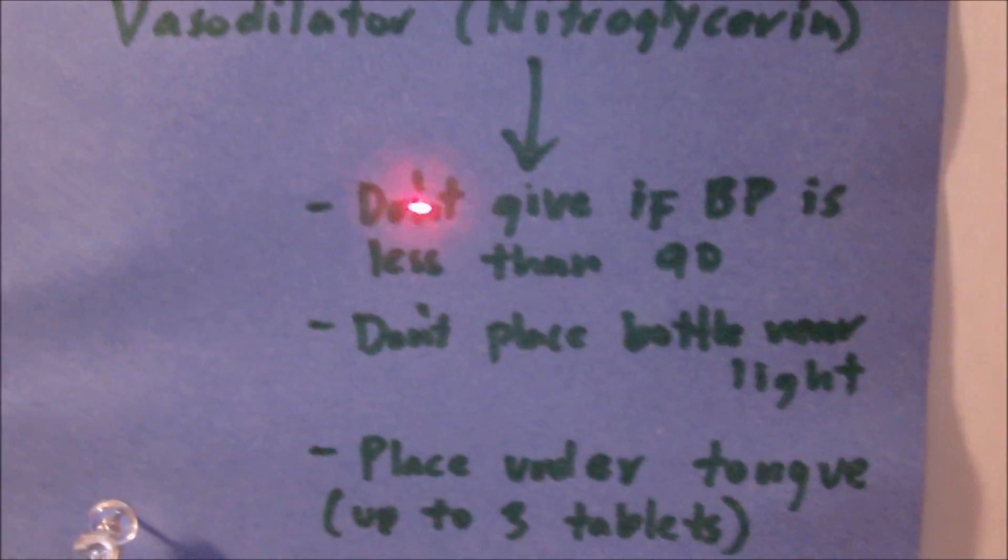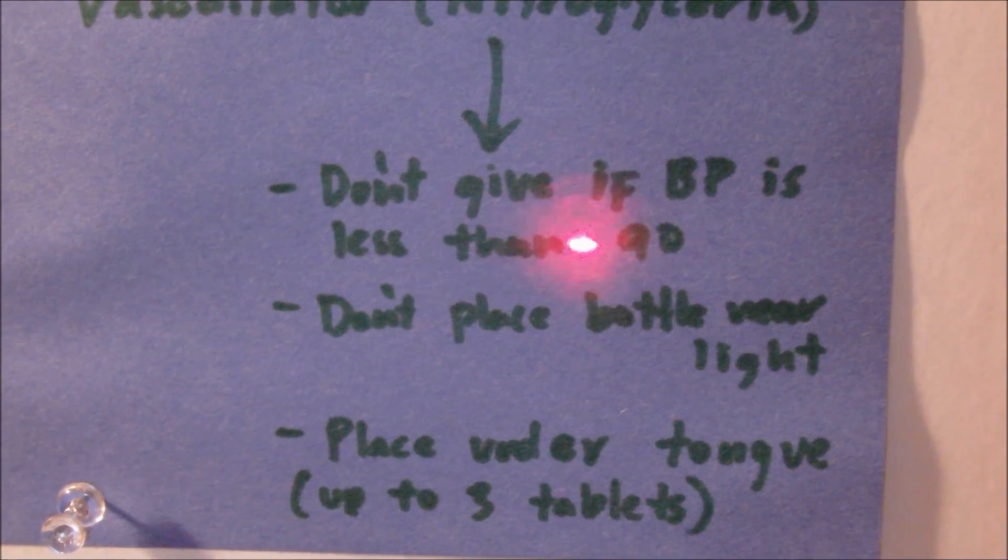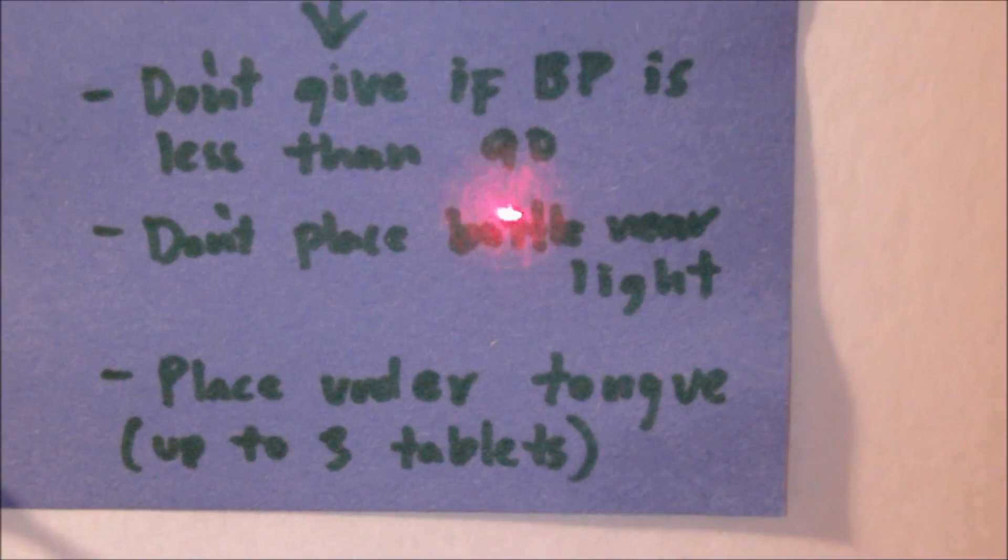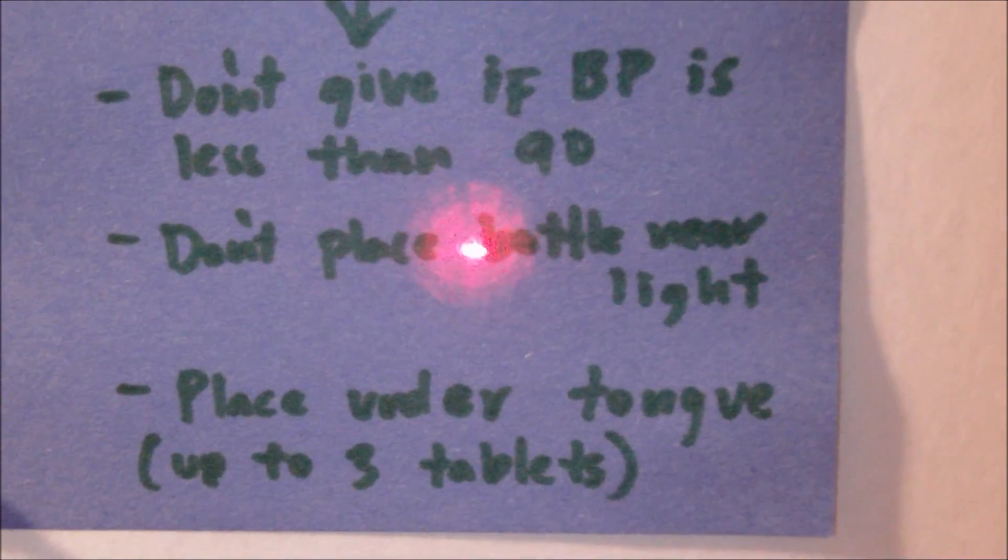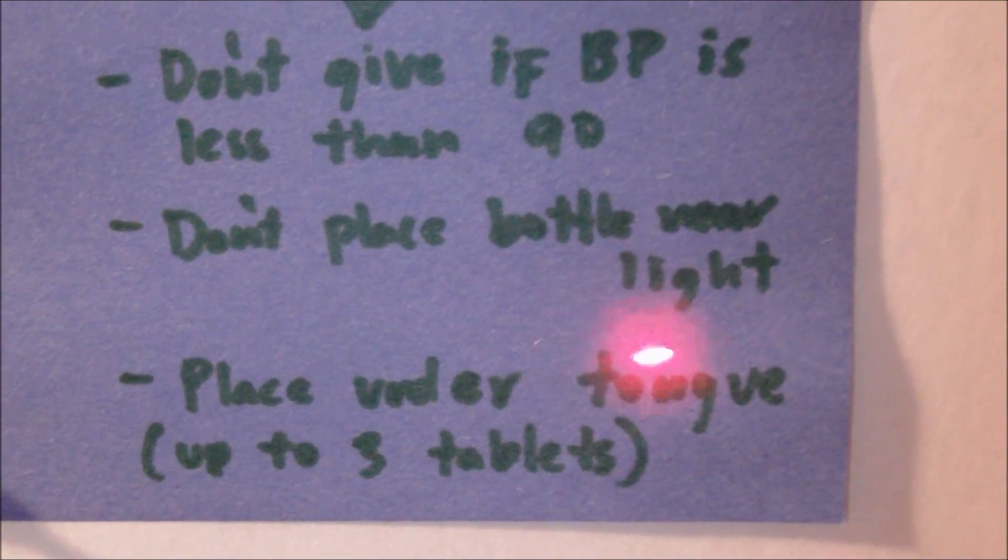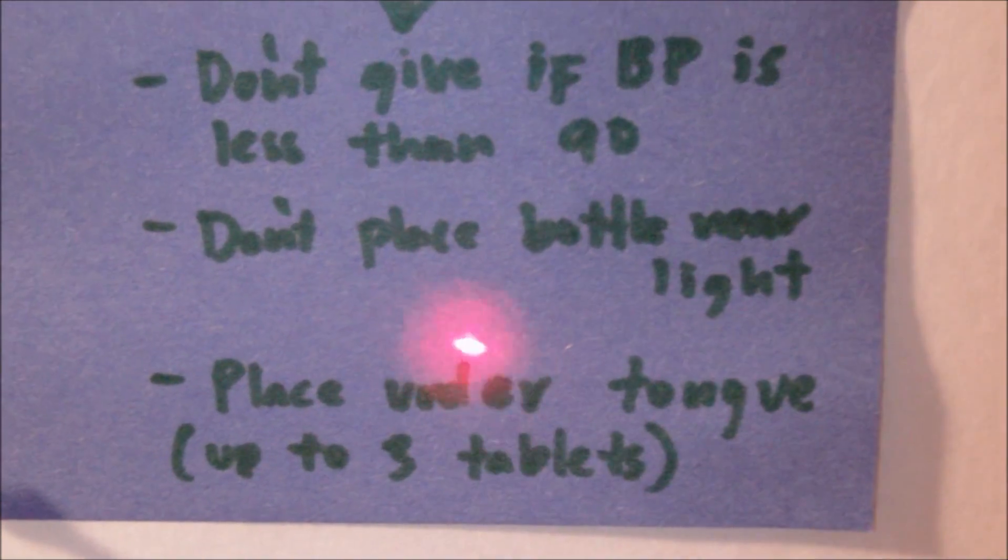Now with nitroglycerin specifically, we hold it if the blood pressure is less than 90 millimeters of mercury. So we don't give the patient nitroglycerin if the blood pressure is less than 90. With nitroglycerin, we need to make sure that we store the tablet in a dark bottle because the light can lessen its efficiency.